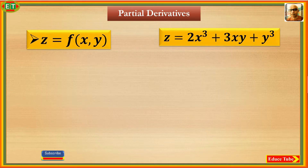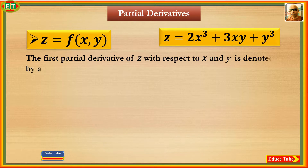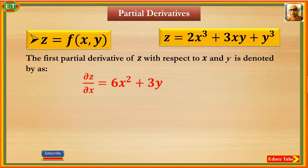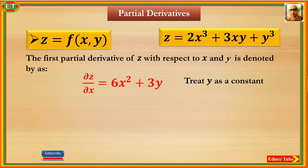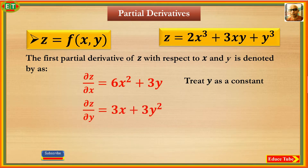Here z can be differentiated with respect to x, producing a partial derivative denoted ∂z/∂x. It can also be differentiated with respect to y to produce another derivative: ∂z/∂y equal to 3x plus 3y squared, treating y as a constant. So for functions of two variables there are two first partial derivatives.